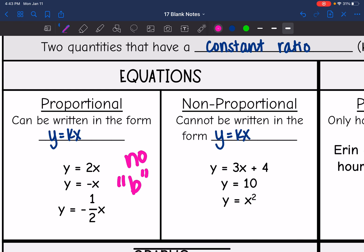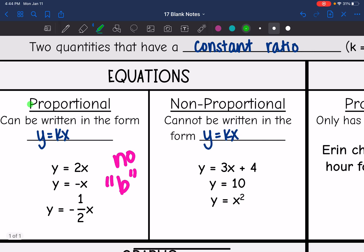Non-proportional cannot be written in the form y equals kx. We might have that b value, it might be y equals mx plus b, it might be like this where we just don't have an x, or you might see an exponent on the x. So proportional, remember, it's going to be written in the form y equals kx.